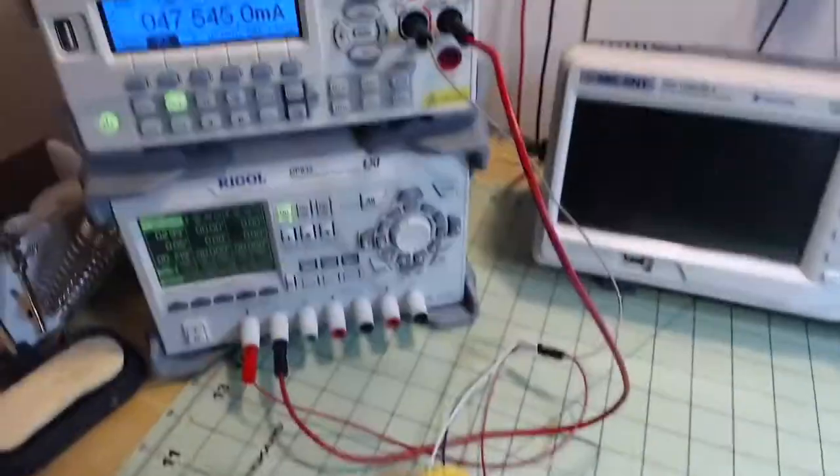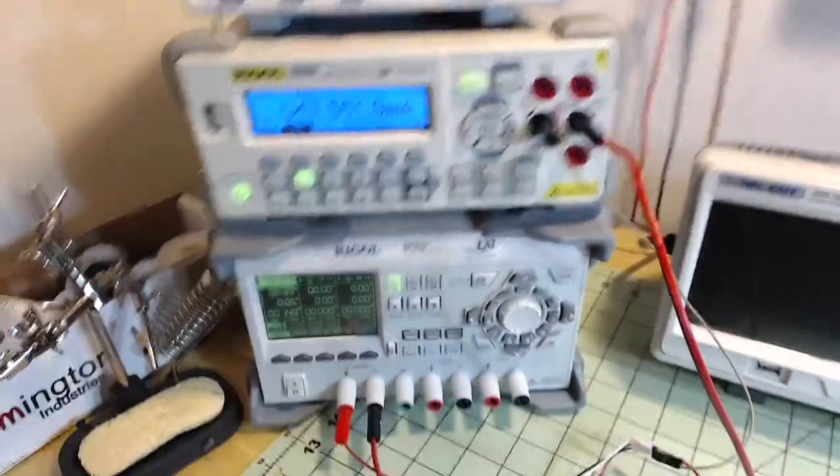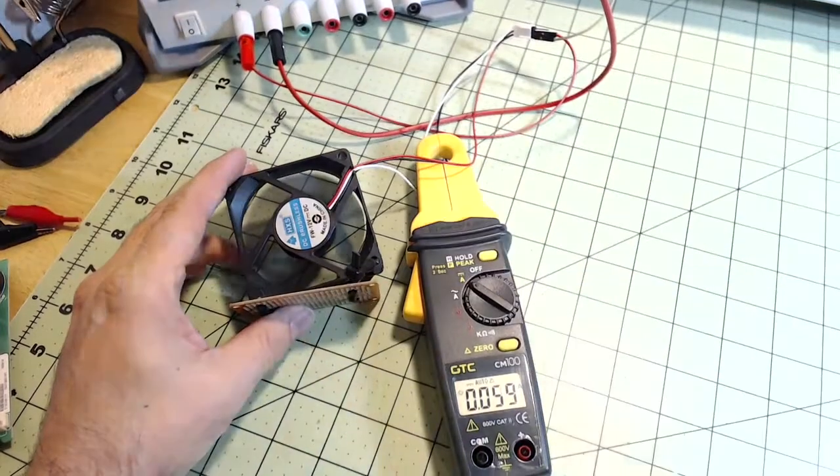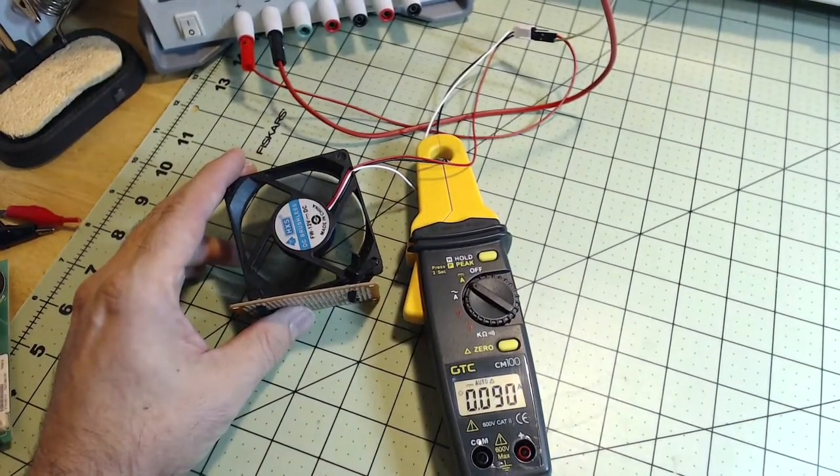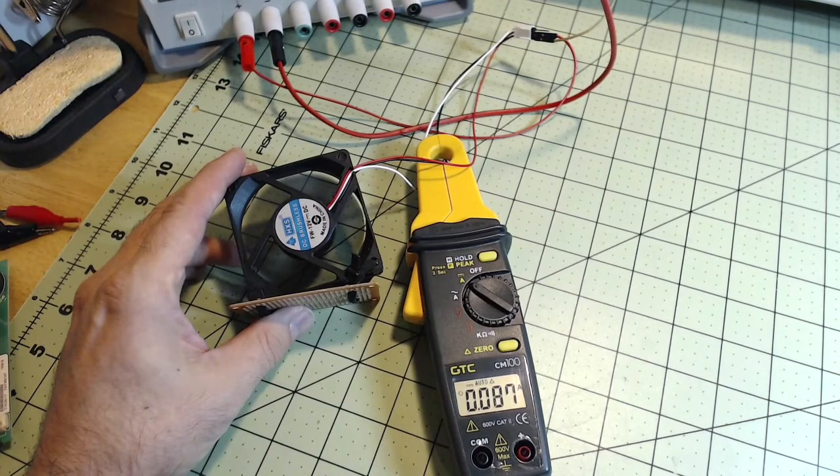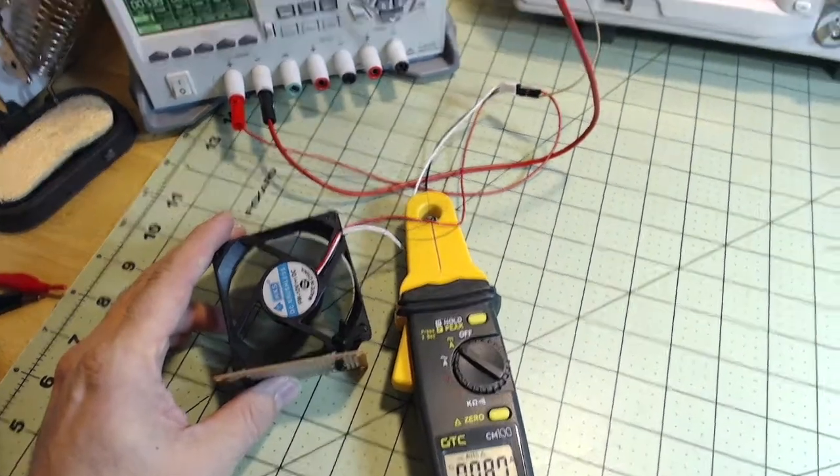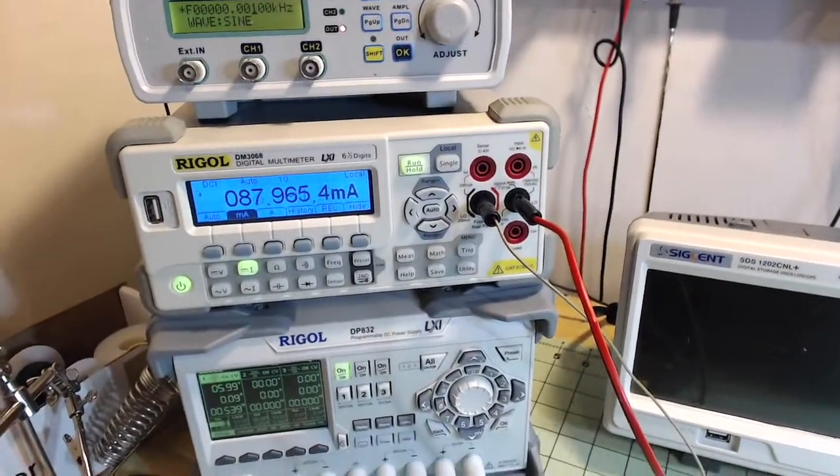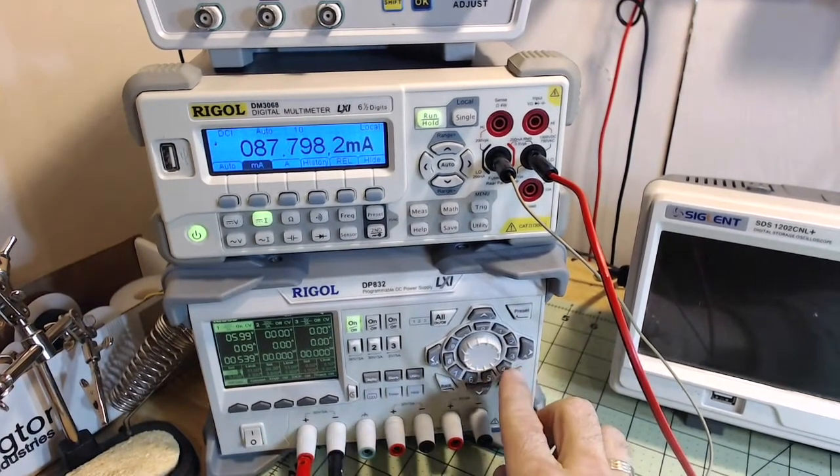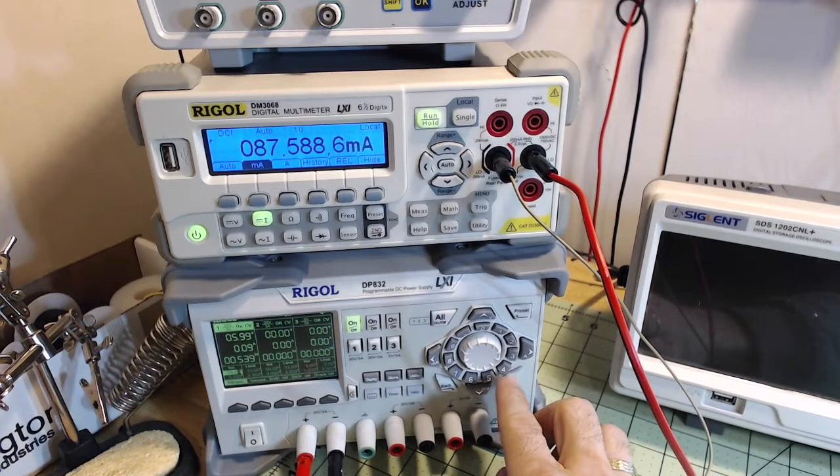Let's do 6 volts. Now we're at 90, 88, 87, let it settle, 88. There it is, 87, 88. I mean this thing is right on accurate, and for 150 bucks I think it's a steal.